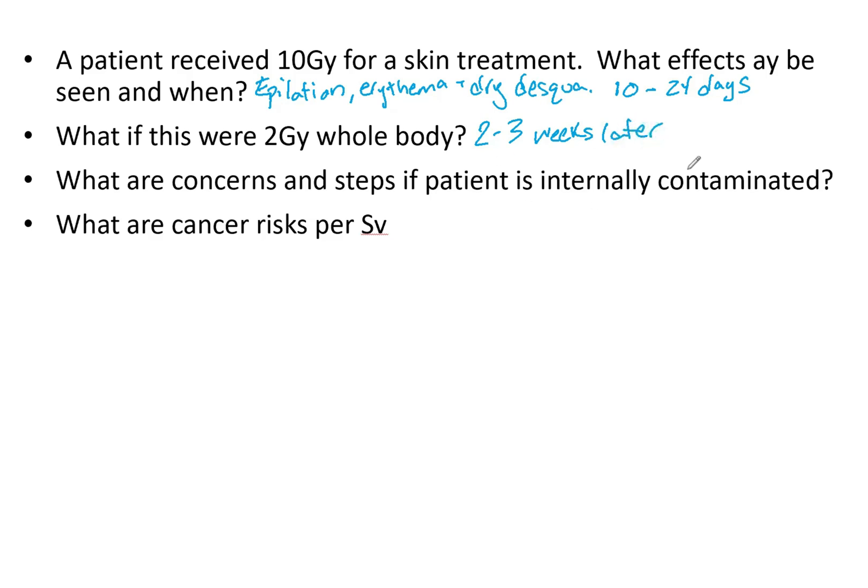If a patient is internally contaminated, internal radiation damage can be fast acting. There are really two strategies to pretty much eliminate the contamination: reduce the absorption, or increase the elimination and excretion of the radiation. For example, you can use agents that soak up a nuclide — like potassium iodide that soaks up iodine, or Prussian blue that soaks up cesium. These are called chelating materials.